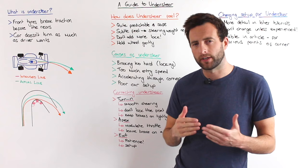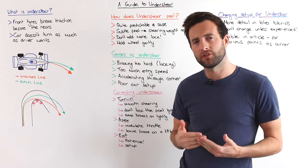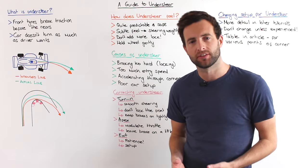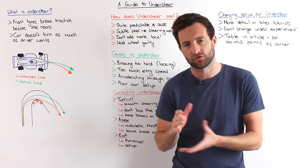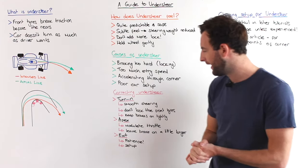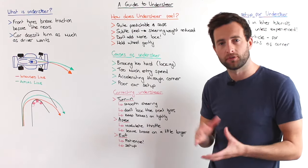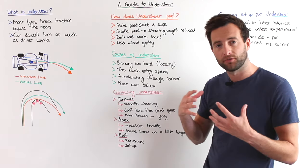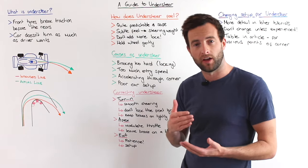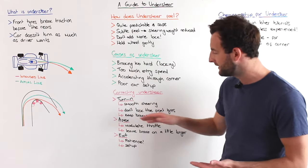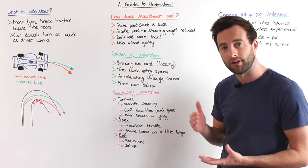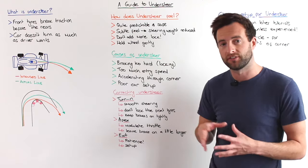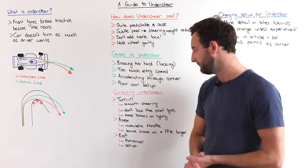Now we're going to take a look at how you can change your driving style to help correct understeer during a session on track. We've split this section into three parts: how to correct understeer at turn-in, at the apex, and at the exit of a corner.